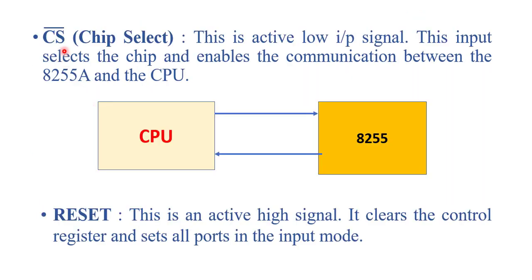The next control signal is CS — the Chip Select pin. This is also an active low input signal that selects the 8255 chip. When chip select is zero, 8255 gets selected and starts communicating with the CPU of the microprocessor. So when chip select is zero, 8255 gets selected and communication starts.